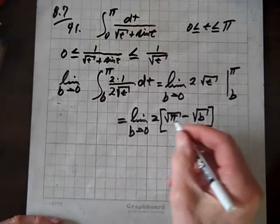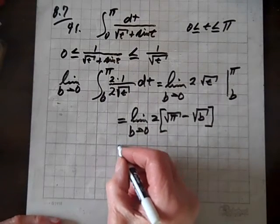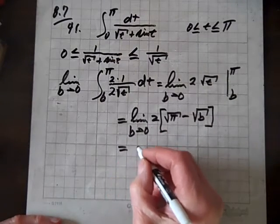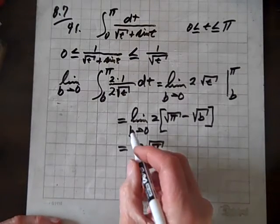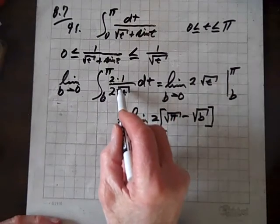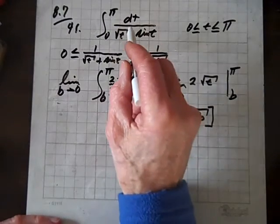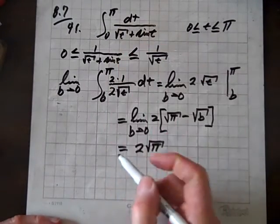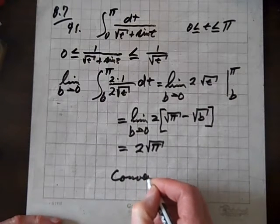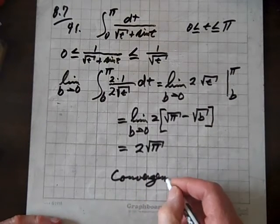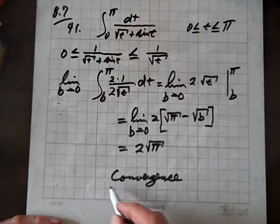And now we'll let b go to 0. And what we get is 2 root of pi. Since this converged, then this converges. So we have convergence by the direct comparison test.